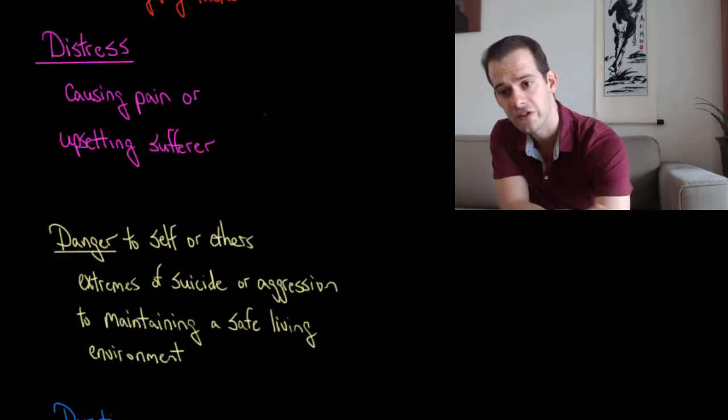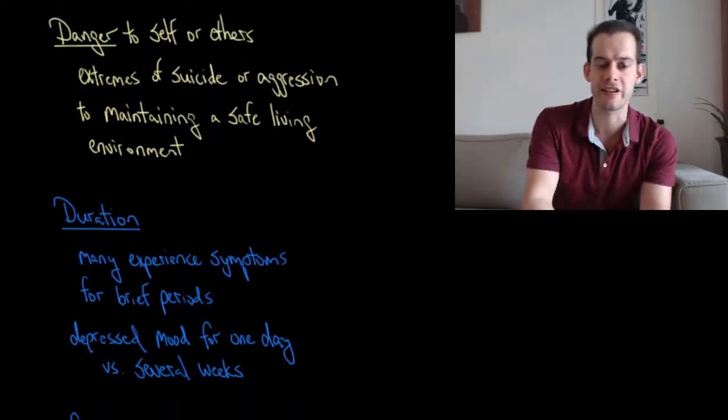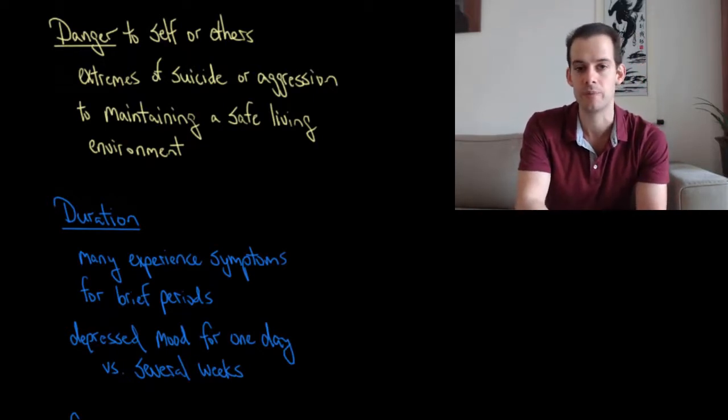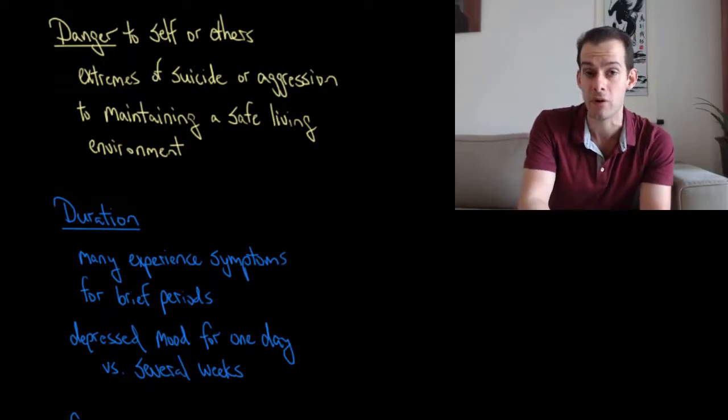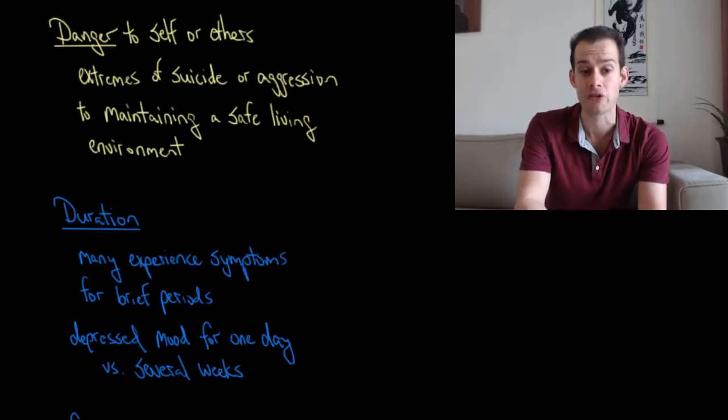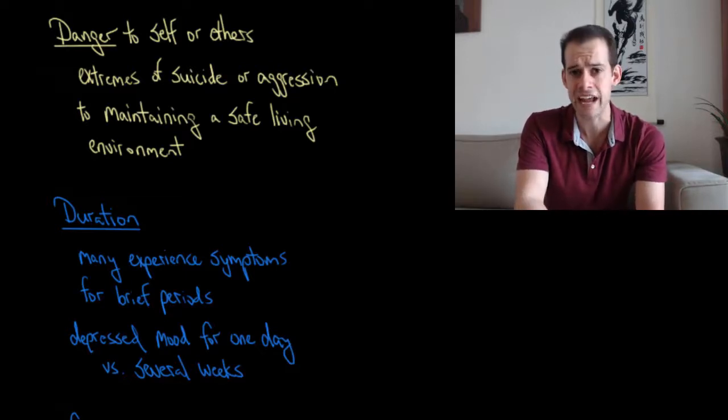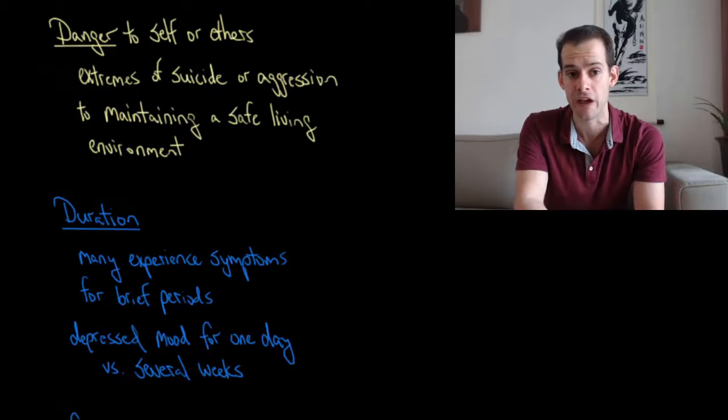Now, this brings us to a few other related D words. And the first of these is danger. So when something represents a danger to the person themselves or to other people, then we might consider it could potentially be a symptom of a mental illness. Now, of course, the extremes of this are easy to bring to mind. People think about risk of suicide or somebody engaging in violent, aggressive behavior towards others.